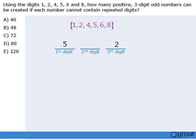At this point we have used up two of our digits, so only four remain. So there are four ways in which we can select the second digit.